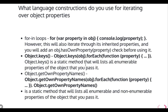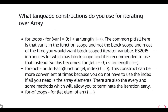How can you iterate an object? You can use a for-in loop, Object.keys() which gives you an array and you do a forEach on it, Object.getOwnPropertyNames() and do a forEach, or Object.entries(). For arrays, you can use a for loop, forEach, map, filter, and other methods on Array.prototype. You can also use the for-of loop to iterate over an array.